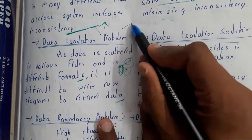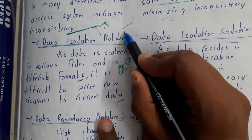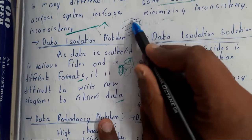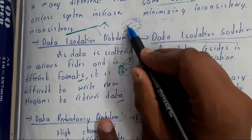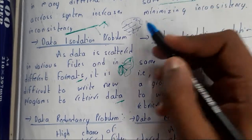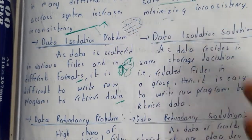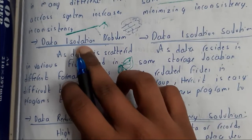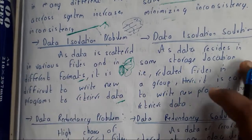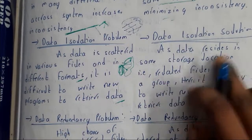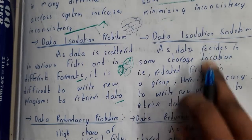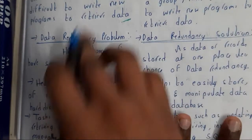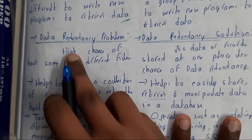Data isolation means we have different formats for writing files — Times New Roman, bold, italics, and many combinations. These differences make searching or retrieving data complex. In DBMS, however, we have a standard format and everything follows that standard.